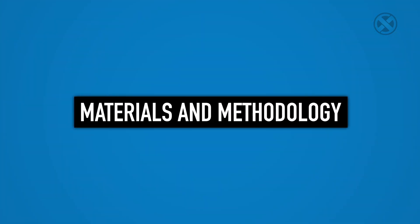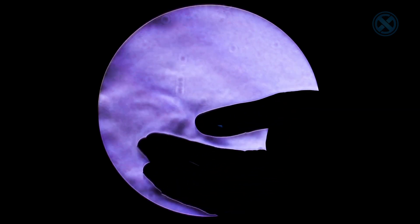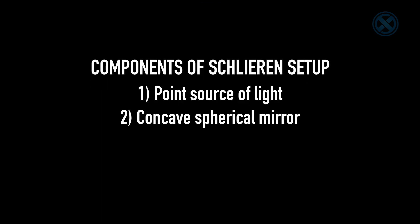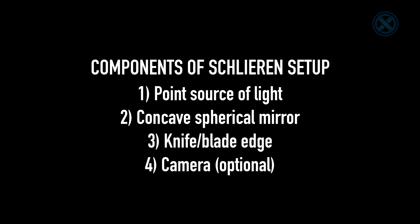Now let's figure out what we need to prepare our setup and how it works. There are a number of possible configurations of this technique, each with its own unique list of benefits, drawbacks, and necessary components. Some variations use multiple mirrors, lenses, even lasers. I chose a small-scale arrangement that relies on a single mirror because it's cheap and simple, but still relatively powerful. It's so sensitive that it even lets you visualize body heat. This particular setup requires four main components: a point source of light, a concave spherical mirror, a knife or other blade edge, and a camera with a high zoom.